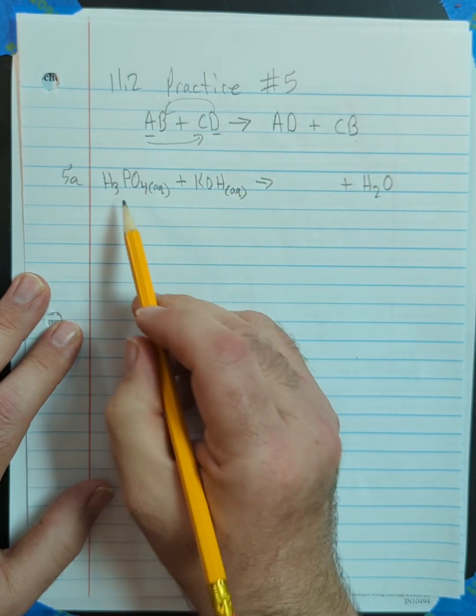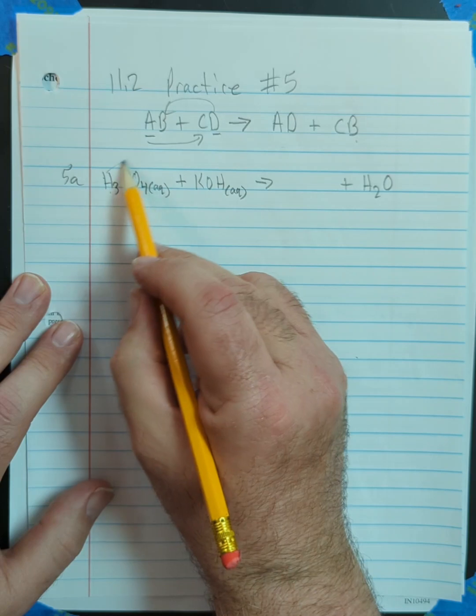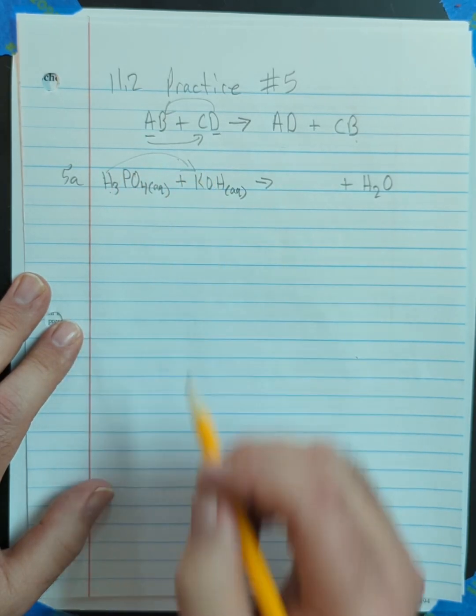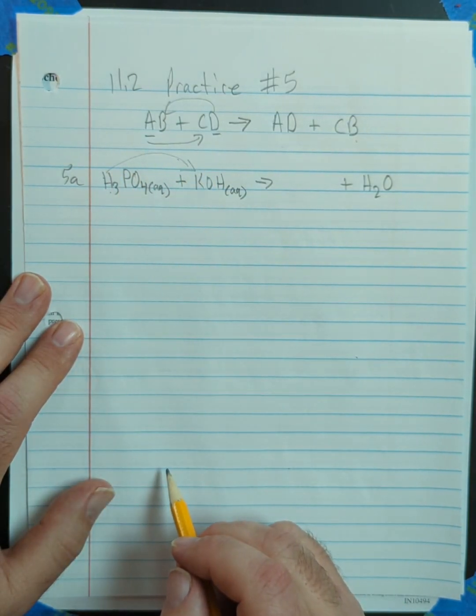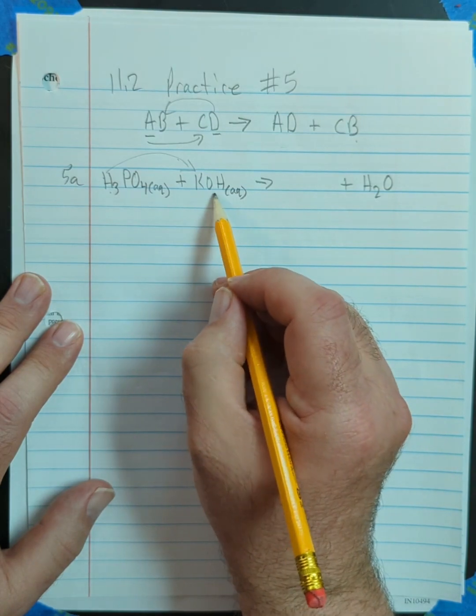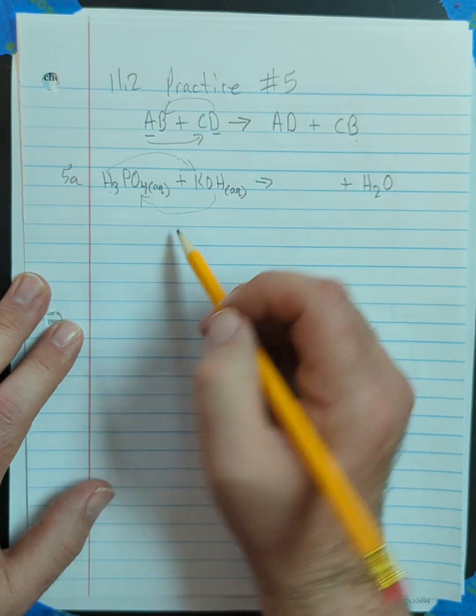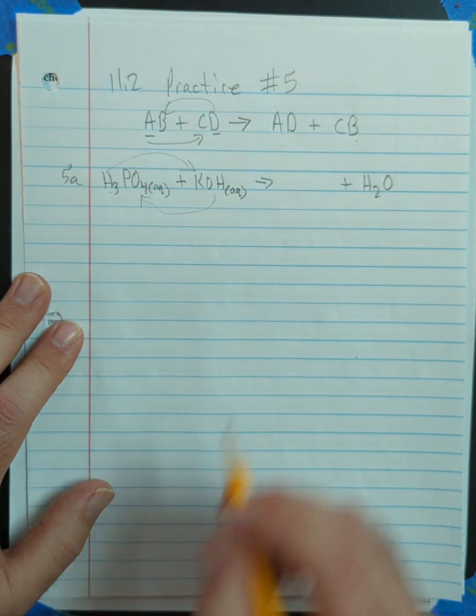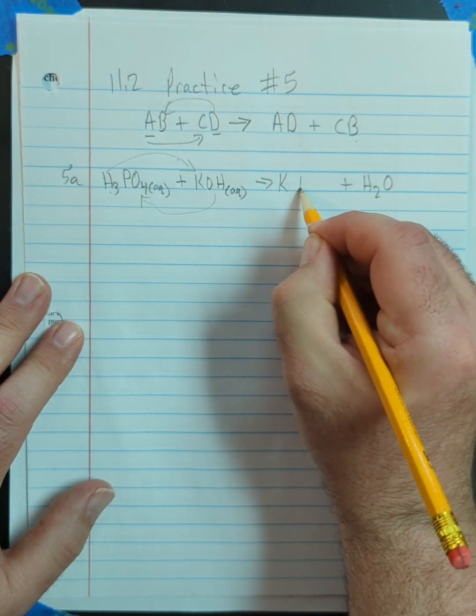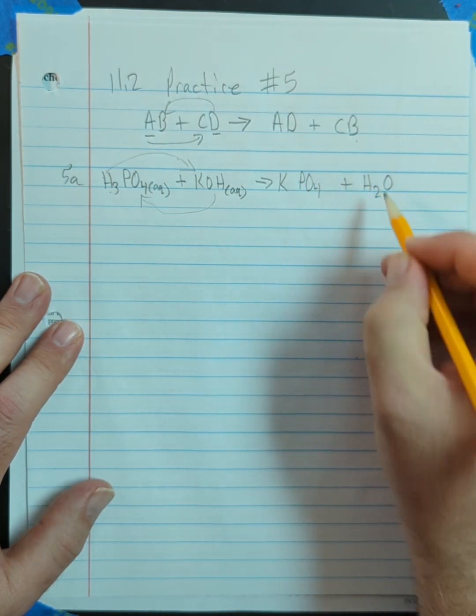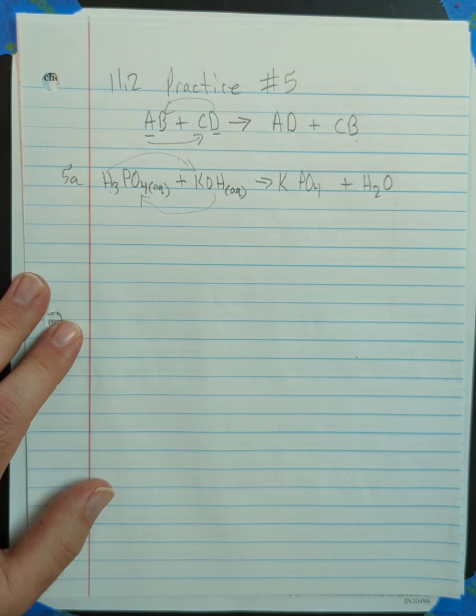So what's happening is this hydrogen is replacing the potassium. And the OH is replacing the PO4. So we're going to have K3PO4 plus H2O.